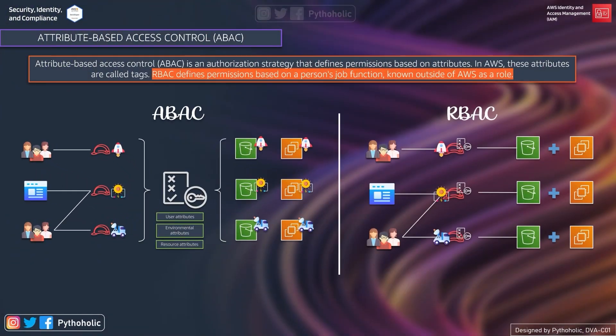ABAC, on the left, is an authorization strategy that defines permissions based on attributes — called tags in AWS. RBAC, on the right, defines permissions based on the job function of a person, known outside of AWS as roles — hence the name role-based access control.